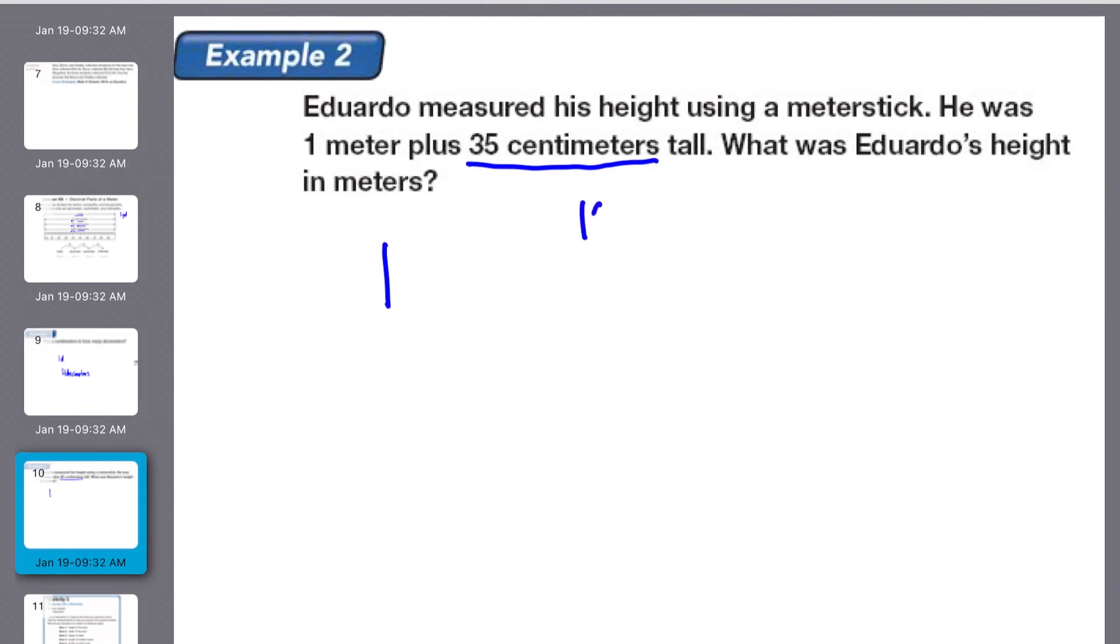Well there are a hundred centimeters in one meter, which means each centimeter would be one one hundredth of a meter, which is the same as 0.01 meters is one centimeter. So we could have one point three five or one and thirty five hundredths meters tall.